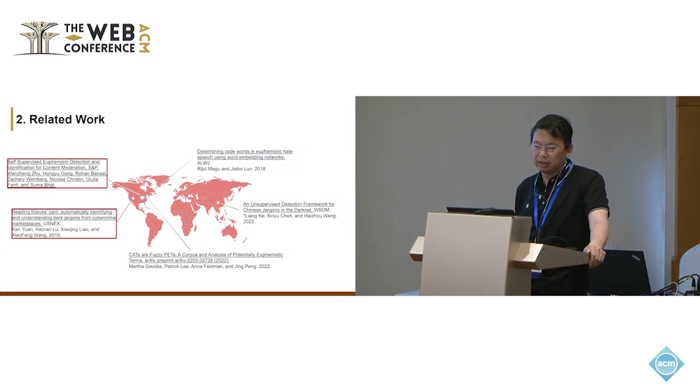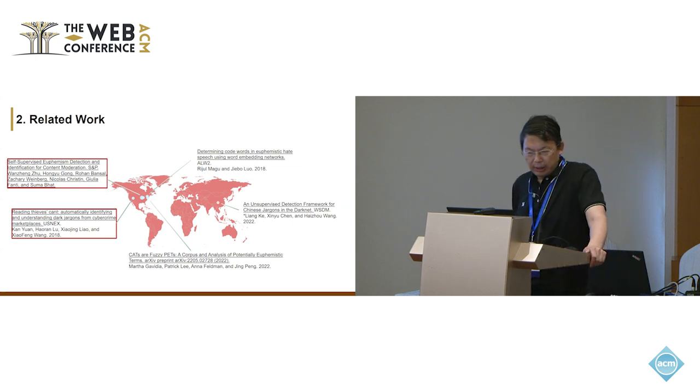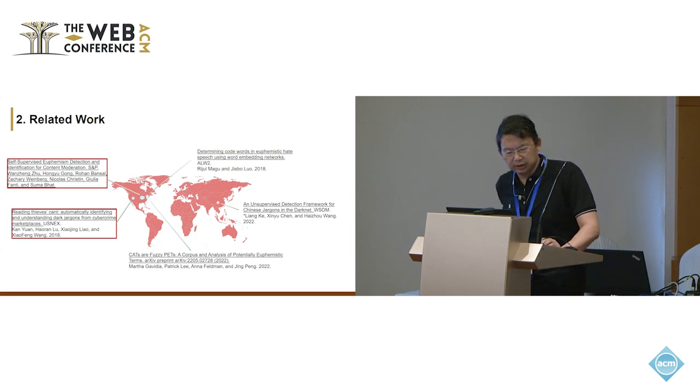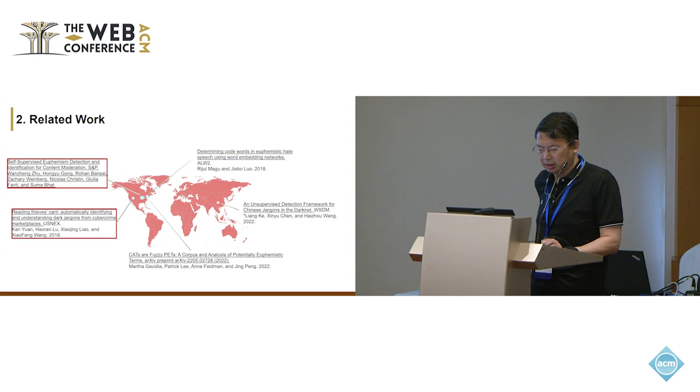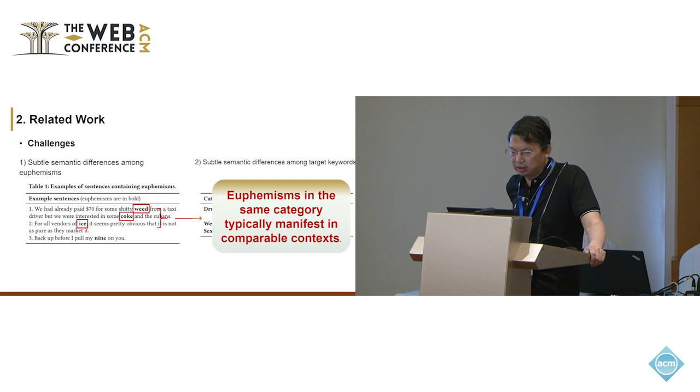Although current studies of euphemism identification have paid attention to the context information, euphemism identification means to find the actual meaning of the word. We name it the target keyword. But the current methods disregard the subtle semantic distinctions among the euphemism and the target keyword. There are mainly two challenges.